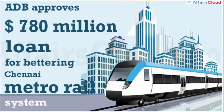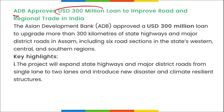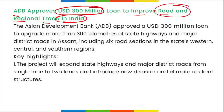Asian Development Bank recently approved a 780 million dollar loan for the Chennai Metro Rail System to improve network connectivity. ADB will also provide an additional 1 million dollar technical assistance grant to help Chennai Metro Rail with planning and management of multimodal integration. Additionally, ADB approved a 300 million dollar loan to improve road and regional trade in India.